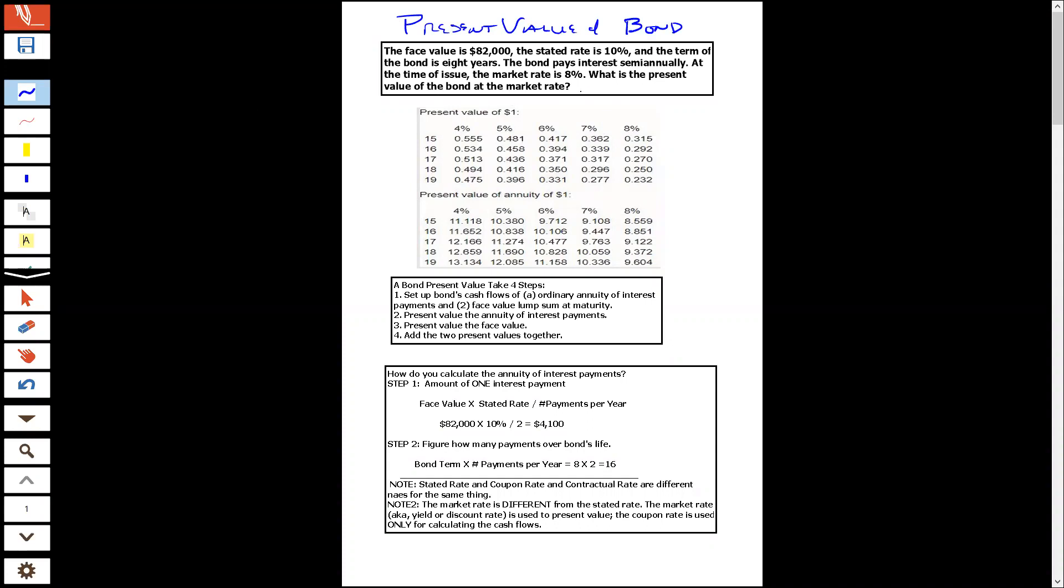So here's the question. We have a face value $82,000 bond, stated rate is 10%, 8-year bond term which means it's paid off at the end of eight years. Pays interest every six months, that is semi-annually. The market rate is 8% and it asks what's the present value of the bond.